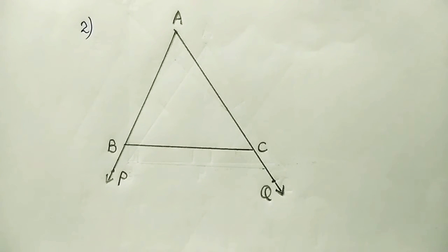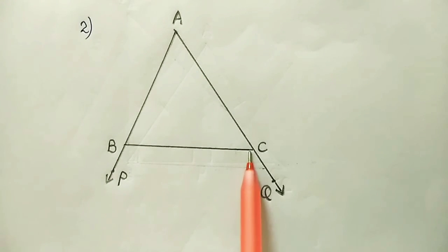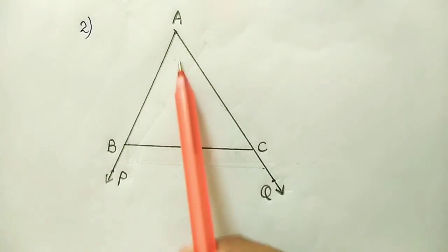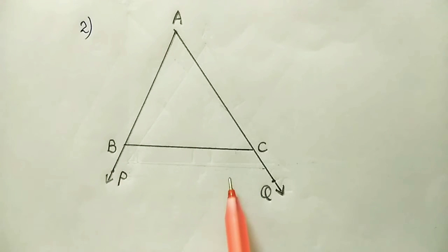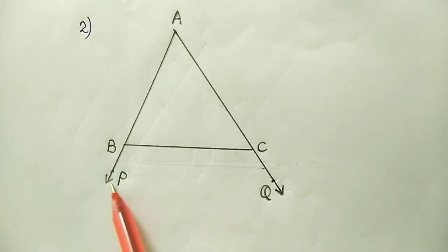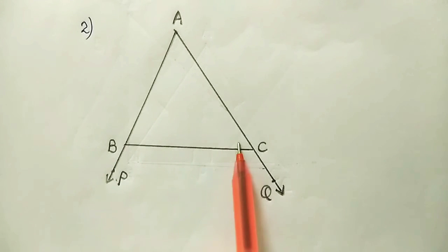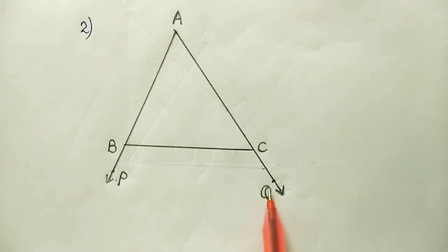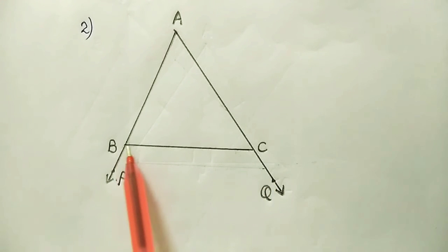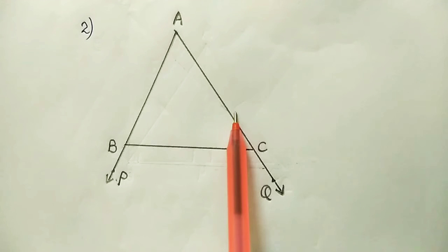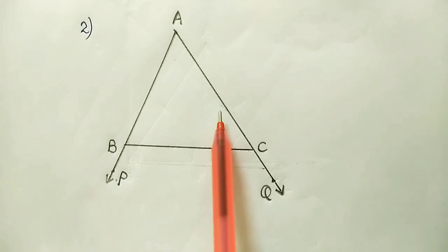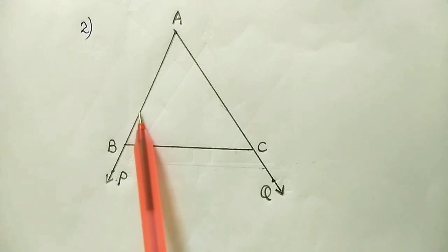Question number 2. In triangle ABC, sides AB and AC are extended to points P and Q respectively. Side AB is extended to point P and side AC is extended to point Q. It is given that angle PBC is less than angle QCB. We have to show that AC is greater than AB.